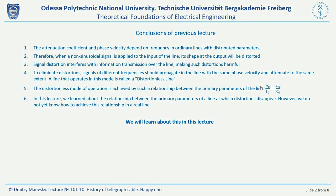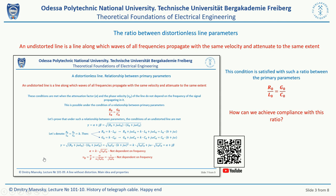That will be the topic of this lecture. First of all, let's recall lecture number 9, titled 'A Line Without Distortions – Main Idea and Properties.' You can watch this lecture on our channel through the link provided in this QR code. In that lecture we discovered that the phase velocity and attenuation factor in a line will not depend on frequency if the specific resistance divided by specific inductance equals the specific conductance divided by specific capacitance. Such a parameter relationship can be achieved by modifying one or more of the line's primary parameters.